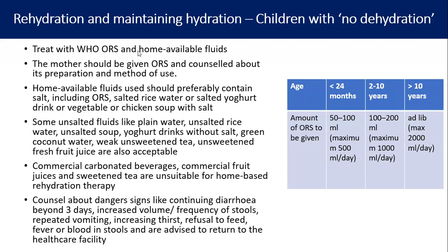Anti-secretory drugs should not be routinely used. Antibiotics are indicated in bacillary dysentery, cholera, amoebiasis, and giardiasis. When acute diarrhea is a manifestation of systemic infection in a malnourished, premature, or young infant, age-appropriate systemic antibiotic is to be given. Otherwise, most acute diarrhea in children does not need antibiotics, anti-motility drugs, or anti-secretory agents.